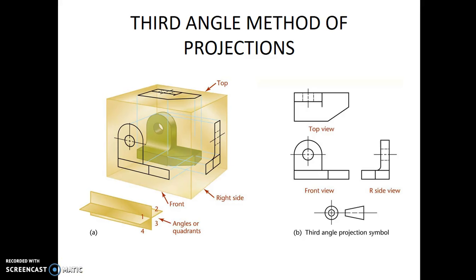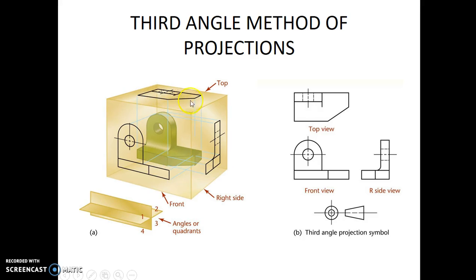Recalling the third angle method of projections, we will see that in the third angle method of projection, the object is kept in the third quadrant and the projection plane is in between the viewer and the object. The projection lines are taken towards the projection plane and towards the viewer. We get the front view on the frontal plane, the top view on the horizontal plane, and the side view on the profile plane.